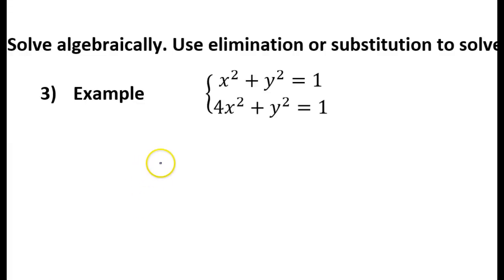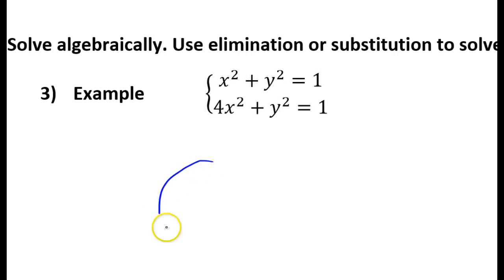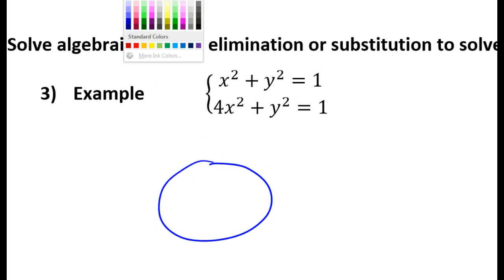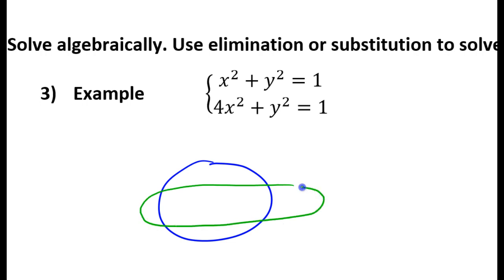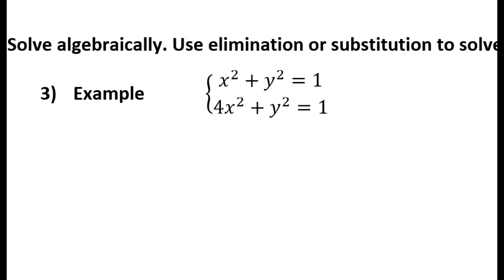In this video I will show you how to solve a system of conic sections. In this case we have a circle and an ellipse. We could have up to four intersection points between the circle and the ellipse, and we are looking for those intersection points. We're going to use elimination on this problem.